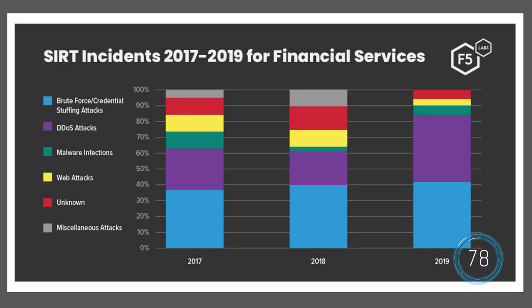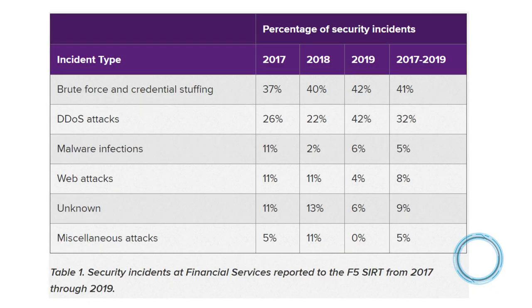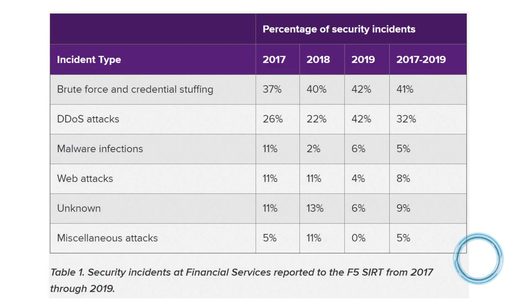From 2017 to 2019, attackers have been realizing their dreams via two vectors: brute force and credential stuffing attacks at 41% and DDoS attacks at 32%. Both are growing. It isn't surprising that credential stuffing and brute force attacks have been the biggest bets for attackers recently,